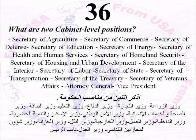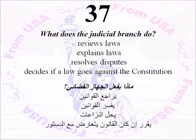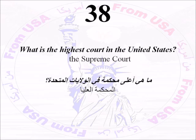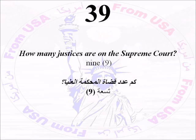Number Thirty-Seven: What does the judicial branch do? It reviews laws, explains laws, resolves disputes, and decides if a law goes against the Constitution. Number Thirty-Eight: What is the highest court in the United States? The Supreme Court. Number Thirty-Nine: How many justices are on the Supreme Court? Nine.